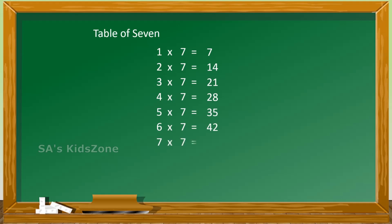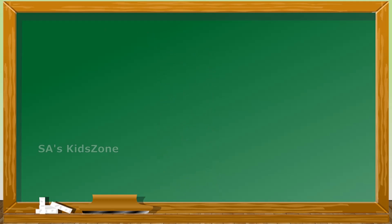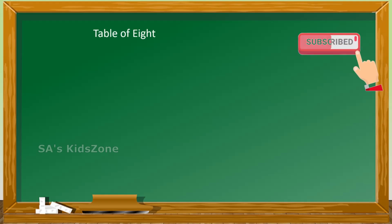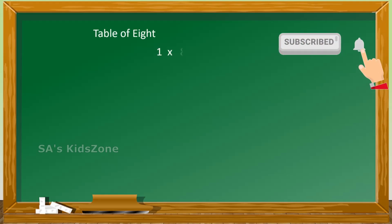7 sevens are 49, 8 sevens are 56, 9 sevens are 63, 10 sevens are 70. The next is table of 8: 1 eight is 8.